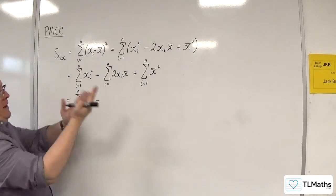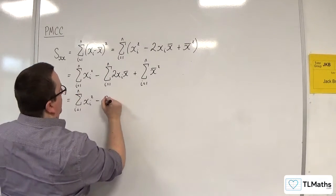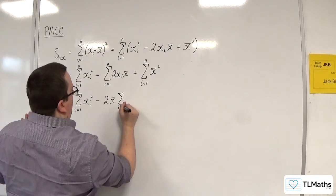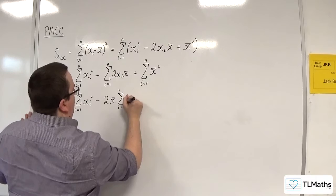The 2 is a constant term, as is the X bar, so I can factor both of them out. So 2X bar times the sum from i is 1 to n of XI.